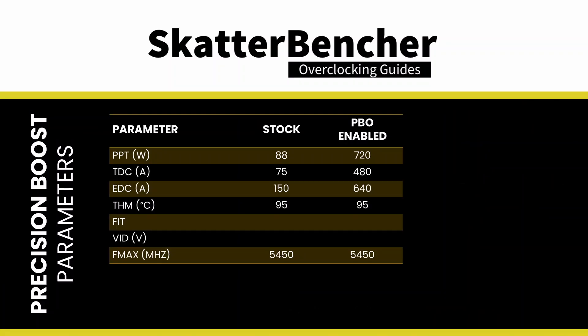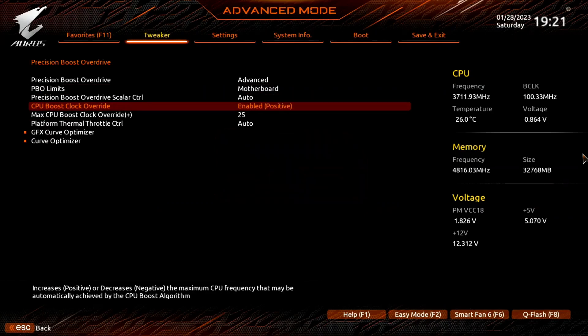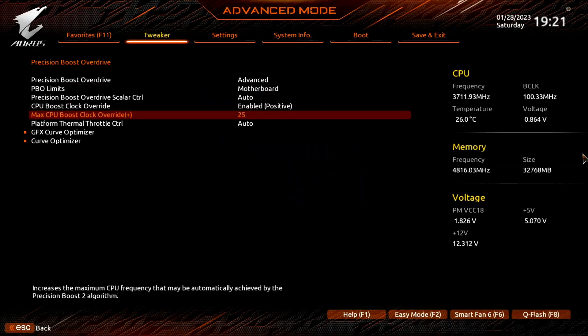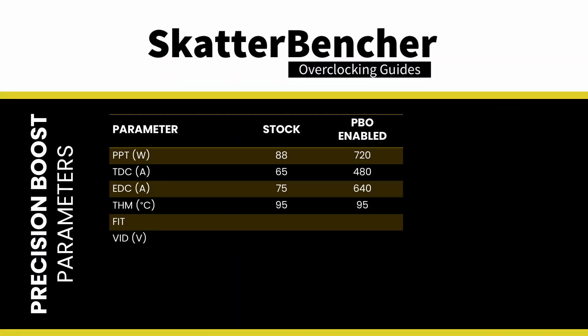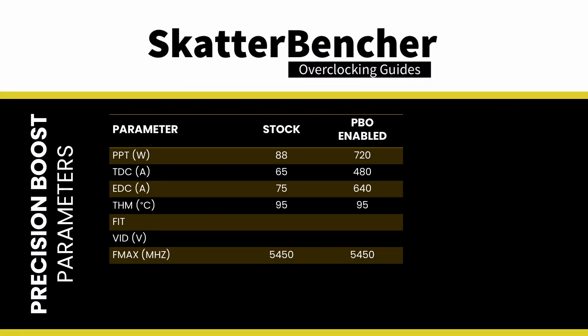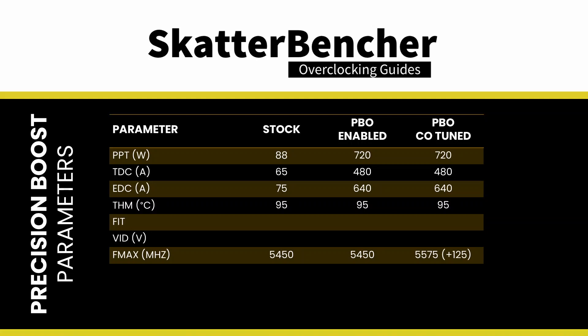On this motherboard, we find that the following values have changed. Set CPU Boost Clock Override to Enabled Positive, and set Max CPU Boost Clock Override to 125. This increases the frequency ceiling by 125 MHz from the factory programmed Max 1T limit. On the Ryzen 9 7900, that limit is 5450 MHz, so increasing it by 125 MHz results in a new frequency ceiling of 5575 MHz.